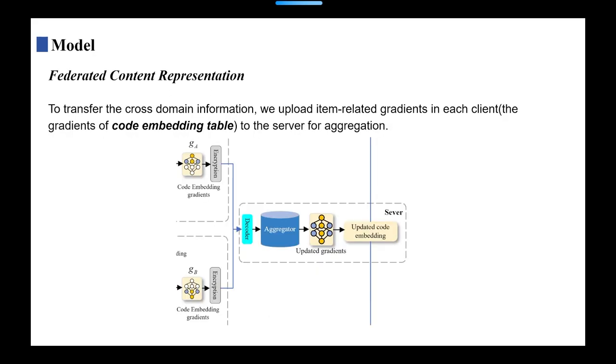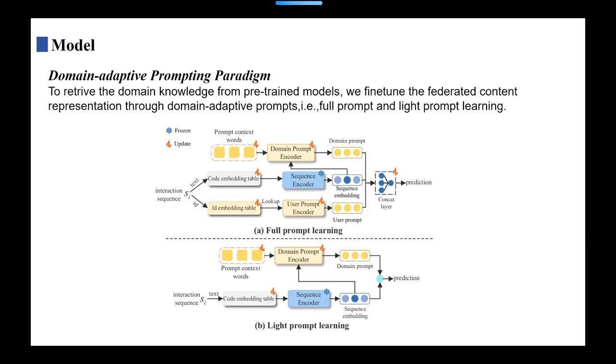To transfer the cross-domain information, we upload item-related gradients in each client, just the gradients of code embedding table, to the server for aggregation.